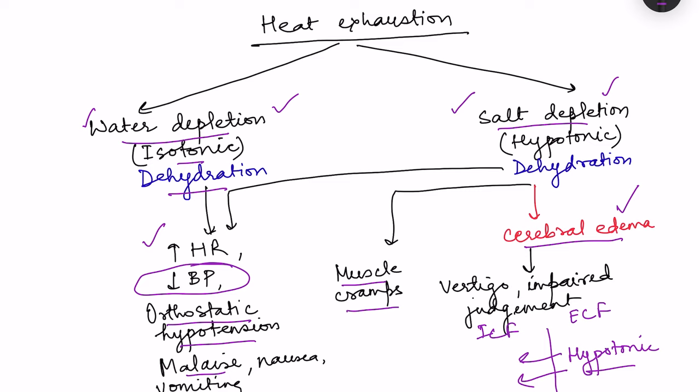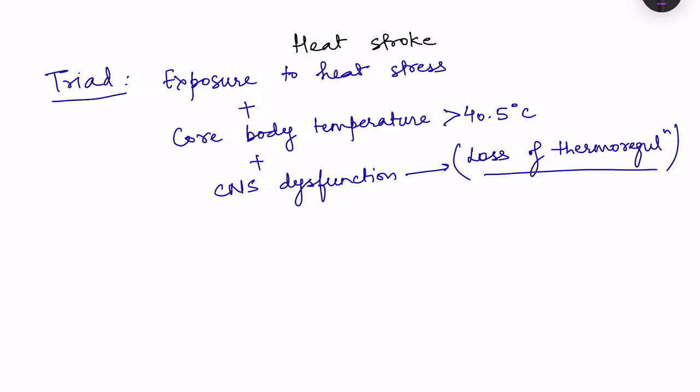Heat syncope, heat cramps, and heat exhaustion all occur when the body's compensatory mechanisms are intact — their manifestations are consequences of those excessive compensatory responses. Heat stroke, however, is where these compensatory mechanisms have stopped working. Heat stroke consists of a triad: exposure to heat in a hot and humid environment, a rise in core body temperature greater than 40.5 degrees Celsius, and CNS dysfunction with loss of thermoregulatory mechanisms.